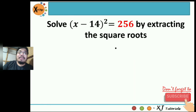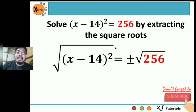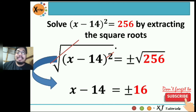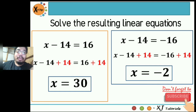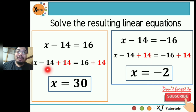Next, solve by extracting the square roots using the square root property. The square root of quantity x minus 14 squared equals positive and negative square root of 256. Cancel the radical sign and exponent 2, leaving x minus 14 equals positive and negative 16. Separating the two roots: first equation x minus 14 equals 16 — add 14 to both sides — x minus 14 plus 14 equals 16 plus 14, so x equals 30.